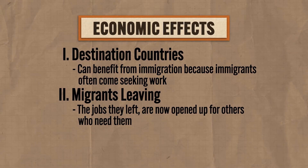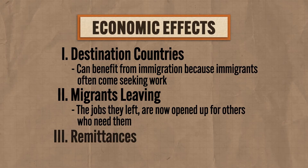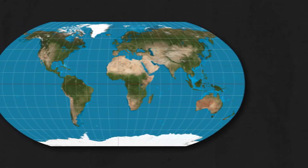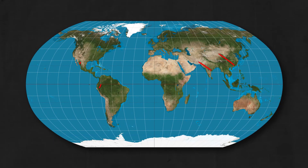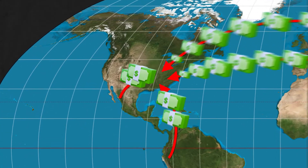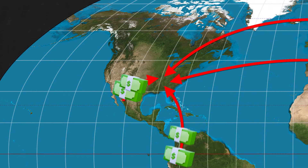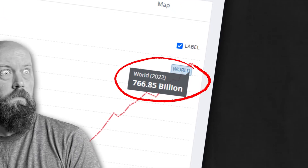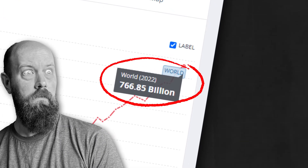Another economic effect of immigration comes in the form of remittances, which is money sent back to the country of origin. When people migrate to find work, they seek jobs that pay higher wages than they could earn in their place of origin, and often they send money back to their family to help improve their standard of living. Remittances make up no small chunk of various economies throughout the world — the World Bank reports that in 2022, something like $766 billion in remittances were transferred between immigrants and their families, to which I say, dang.